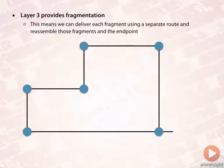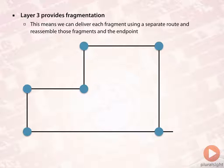Layer three provides a function called fragmentation. This means we can deliver fragments of a packet using separate routes and then reassemble these fragments at the endpoint. Typically, we fragment packets because a packet is larger than what the interfaces in the path can handle. The interfaces have a maximum transmission unit — an MTU — and if we exceed that MTU, then the packet needs to be chopped up so that it will fit through.